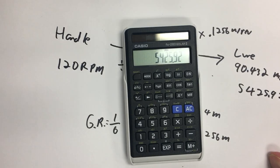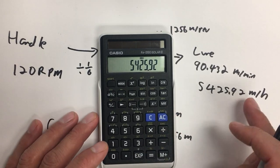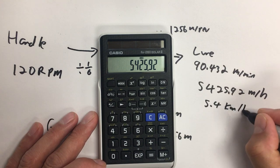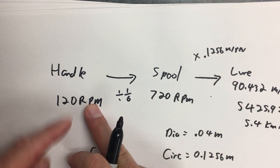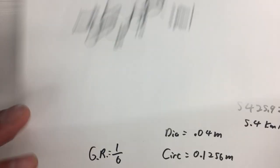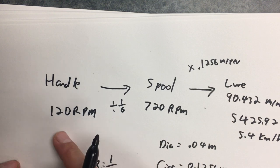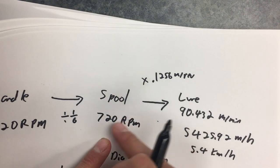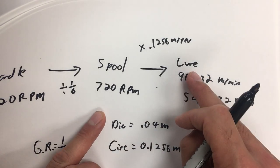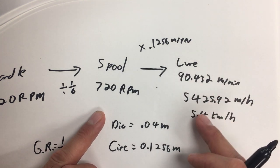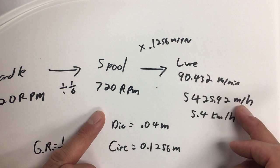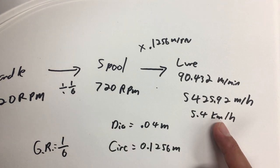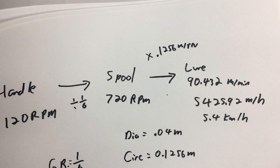To summarize: at 120 RPM on the handle with a gear ratio of 1 over 6, the spool goes six times as fast — 720 RPM. Multiplying the spool's rotational speed by its circumference gives the linear speed in meters per minute. Multiply by 60 for meters per hour, then divide by 1,000 for kilometers per hour. At 120 RPM, the lure moves at 5.4 kilometers per hour — about a fast walking speed, which is realistic for a fishing lure.